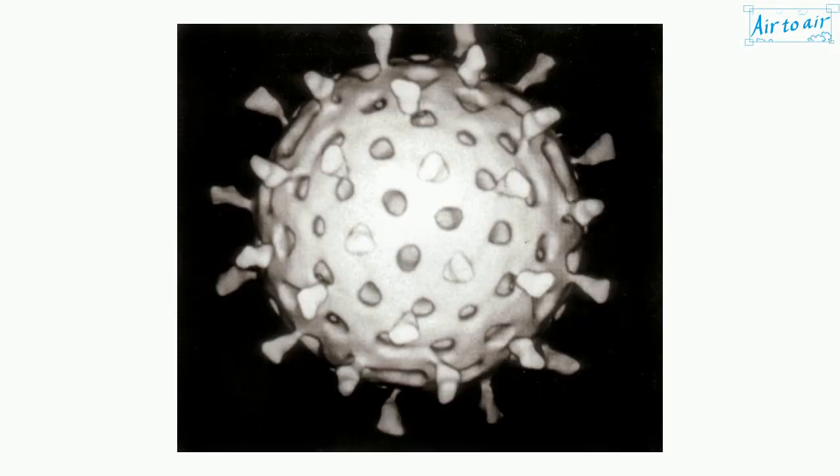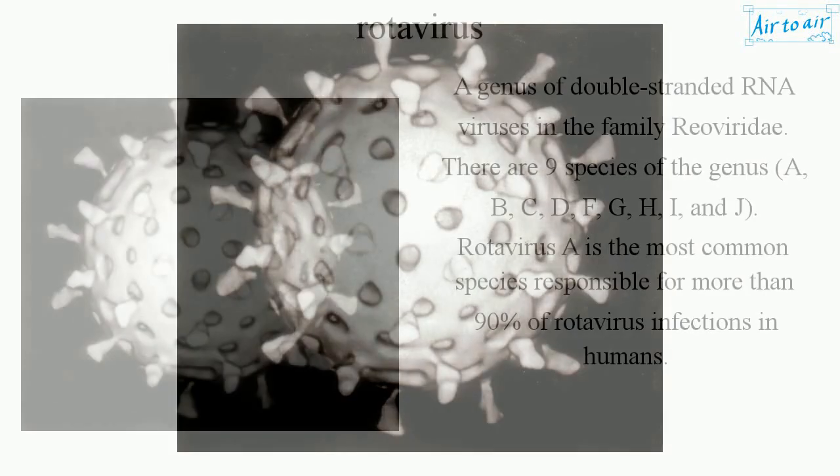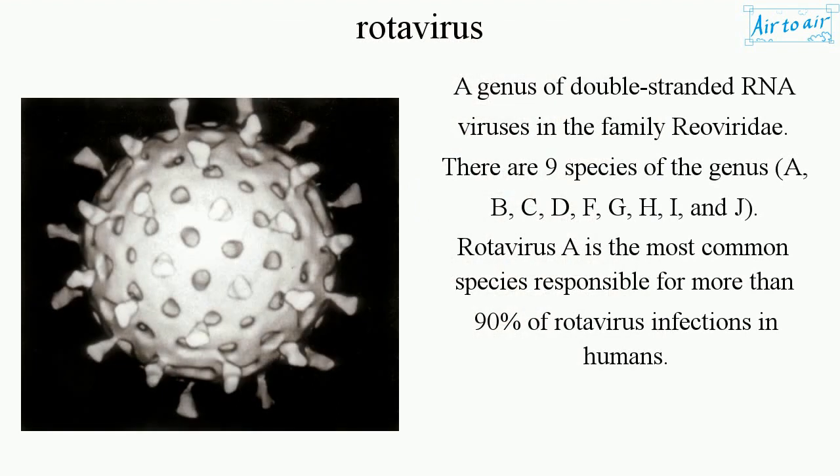Rotavirus. A genus of double-stranded RNA viruses in the family Rheoviridae. There are nine species of the genus: A, B, C, D, F, G, H, I, and J.